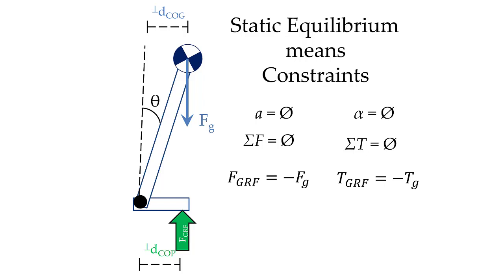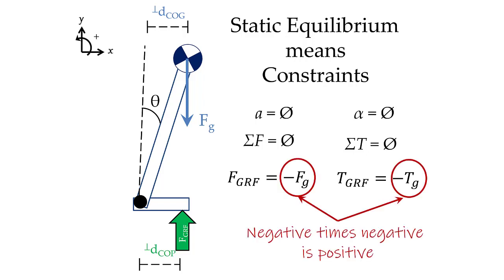This means the ground reaction force has to be equal in magnitude and opposite in direction to the force due to gravity. Additionally, the torque of the ground reaction force has to be equal in magnitude and opposite in direction to the torque due to gravity. Since the force due to gravity is negative, the ground reaction force has to be positive to counteract it. Similarly, if the torque due to gravity creates a negative torque, then the torque due to the ground reaction force has to be positive.